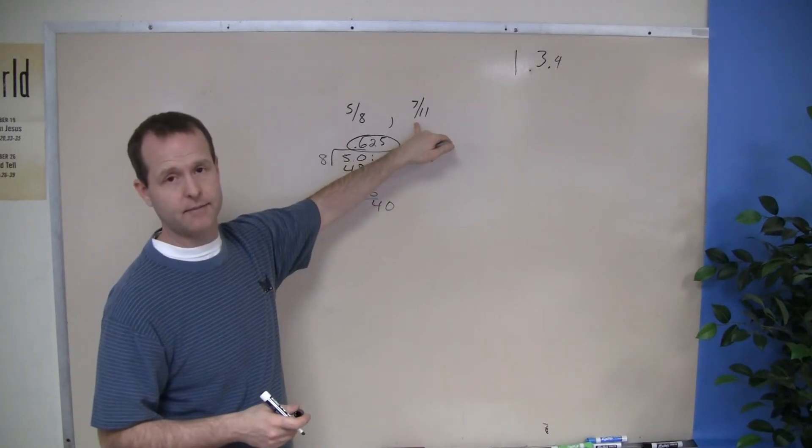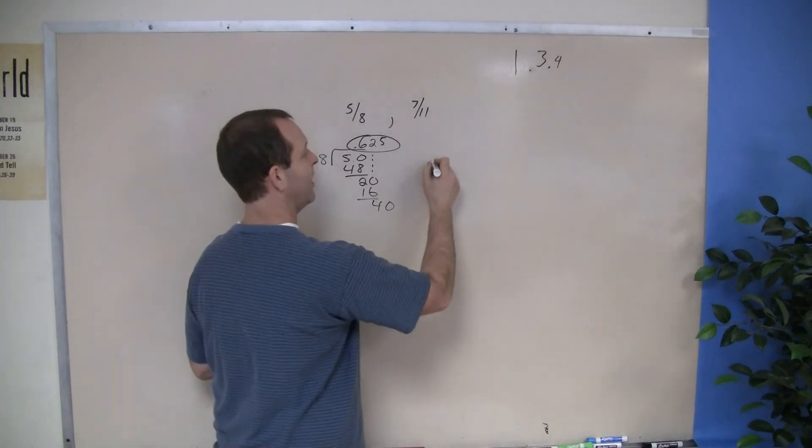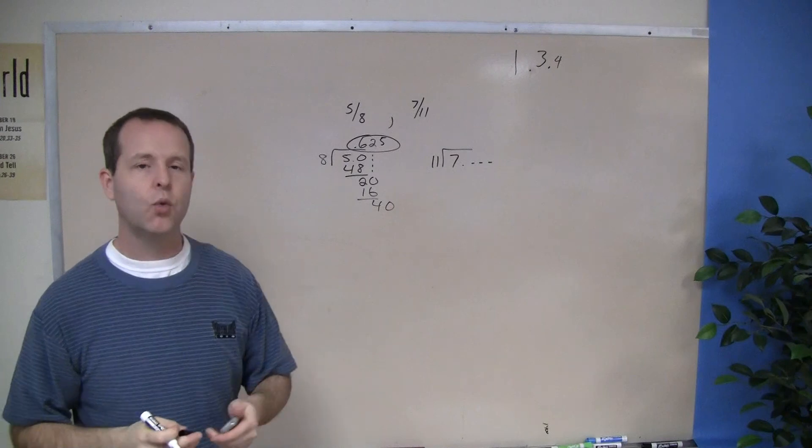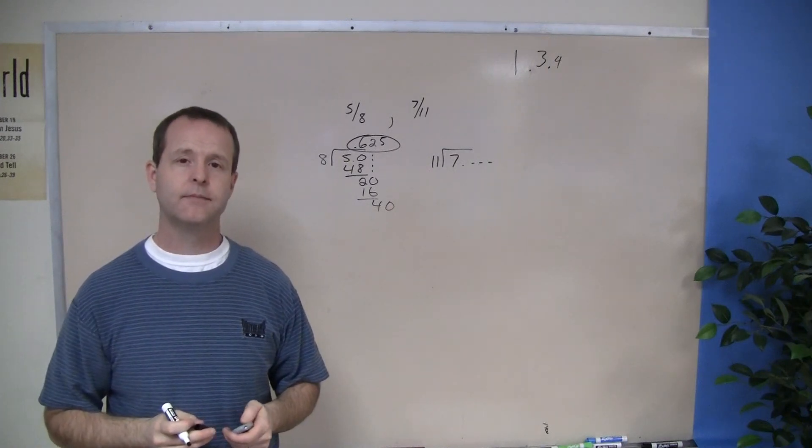Same thing with 7/11. You can just go ahead and put 11 on the outside and 7 and then just start working your way through to get to what its decimal equivalent is.